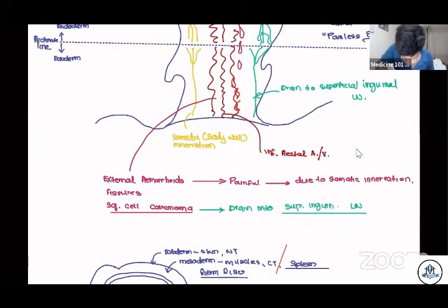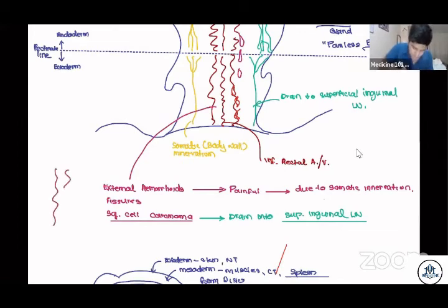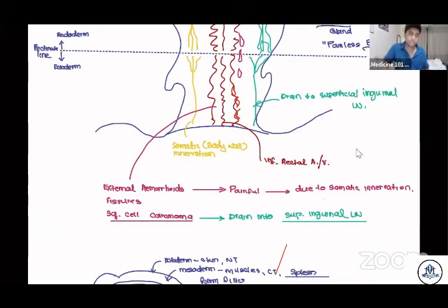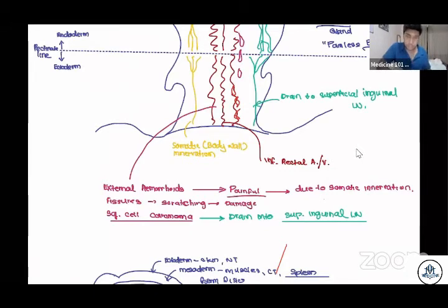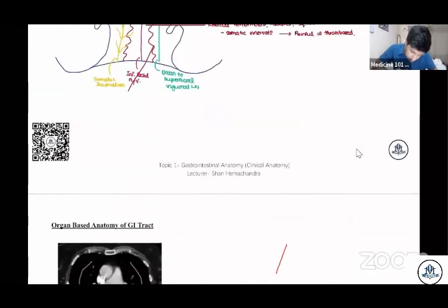One more important thing — external hemorrhoids and squamous cell carcinoma drain into the superficial inguinal lymph nodes. By the time the patient presents, there will be a palpable mass in the superficial inguinal region. Fissures mean cracks — like what you see in an earthquake — one cause of which is scratching, leading to damage in this painful situation.